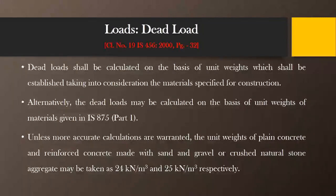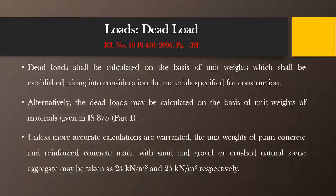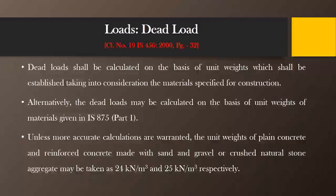The main load which is going to act on the structure at all times is the dead load — that is, the self-weight of the structure or self-weight of the components. The dead load shall be calculated on the basis of unit weights, established taking into consideration the materials specified for construction. Whatever material we are going to use, all those materials have some specific weights, and those weights we have to consider for calculation of the total load. Alternatively, the dead load may be calculated on the basis of unit weights of materials given in IS 875 part 1.